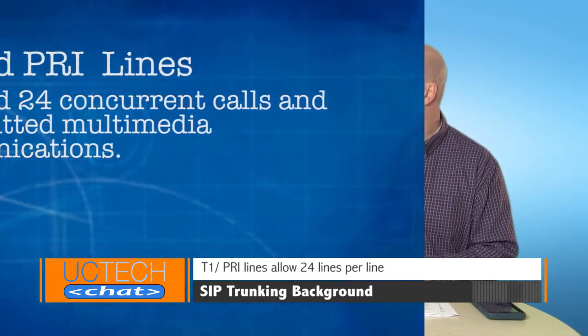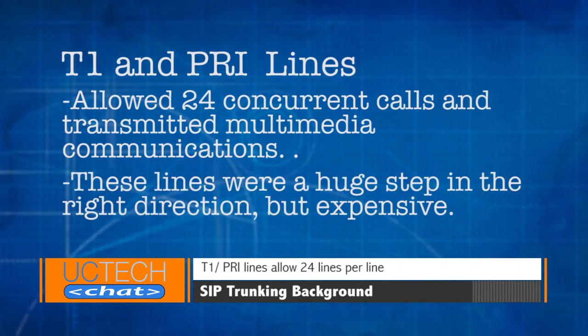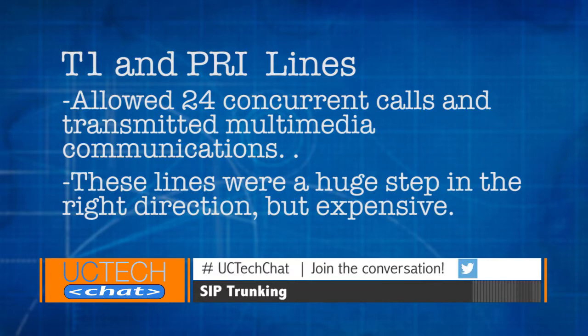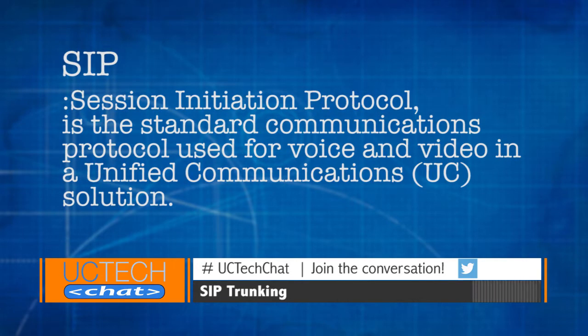Next came T1, or PRI, digital lines, which provided 24 calls per line, which really solved that problem. And they did deliver multimedia, video, instant messaging, and others. But they were really pretty expensive. In short, trunking is a method to dynamically deliver voice and video communications to various pieces of equipment over a data connection. SIP, or Session Initiation Protocol, is the standard communication protocol used for voice and video in a unified communication solution.